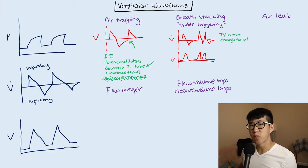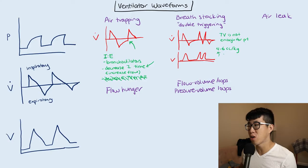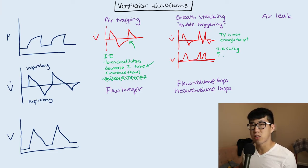For low tidal volume ventilation, we often target four to six cc's per kilogram for tidal volume. But say you're on the lower end of that — at four, or even at six — one of the ways to treat this breath stacking or double triggering is by increasing the tidal volume. You can go up to six cc's per kilogram, or maybe seven or eight slightly, to bump it up and try to reduce the amount of double triggering.